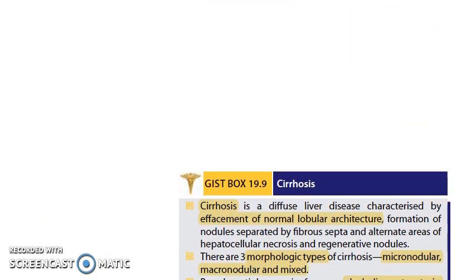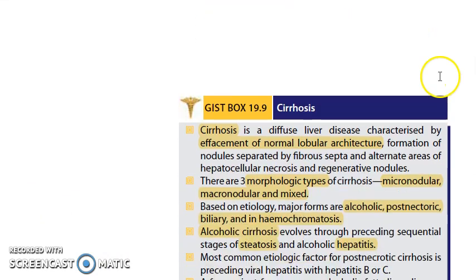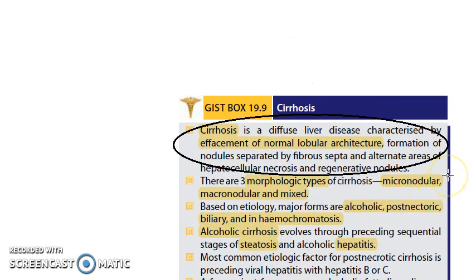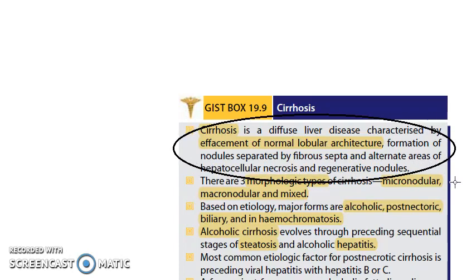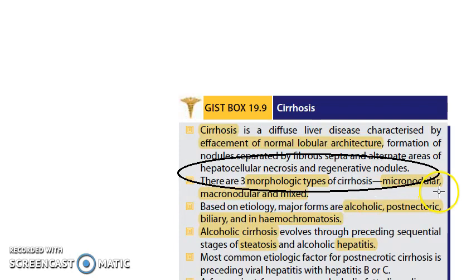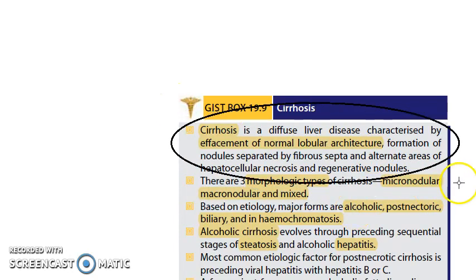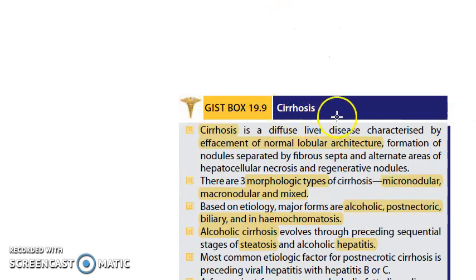Now let us look at the definition of cirrhosis. Cirrhosis is diffuse liver disease characterized by effacement of normal lobar architecture, formation of nodules separated by fibrous septa, and alternate areas of hepatocellular necrosis and regenerative nodules. It's a huge definition, but to remember: normal lobar architecture is gone — it's effaced, nodules are formed.